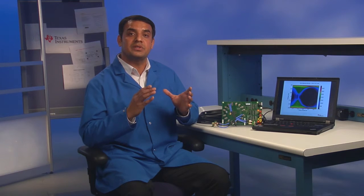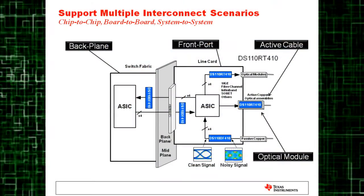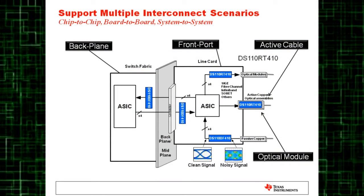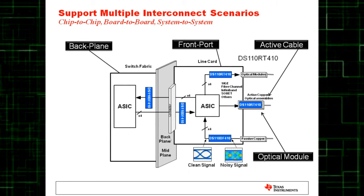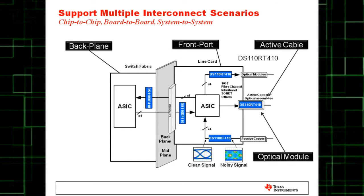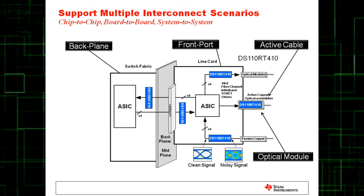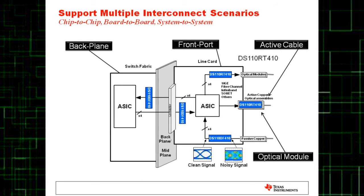These retimer and signal conditioner devices can be used in a variety of communication infrastructure applications, such as backplanes to deal with loss and crosstalk issues, front port or front panel applications to replace PHYs with a low-latency retimer, and active or passive copper cables.